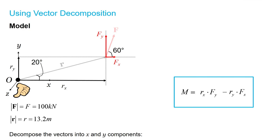Now, we need to calculate all of the various components. Rx will simply be R times cosine of 20 degrees, which will give us a value of 12.4 meters if we substitute the 13.2 meters into this equation.